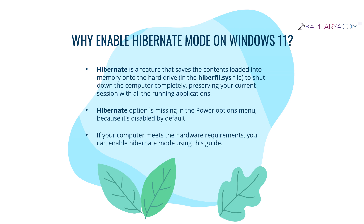In short, under hibernate mode your system gets turned off to save power, but your apps will remain running so that when you resume your system you can start working directly from where you left off. The hibernate option is missing in the power options menu on Windows 11 because it is disabled by default. If your computer meets the hardware requirements, you can use this video guide to enable it.